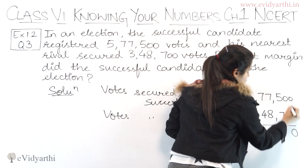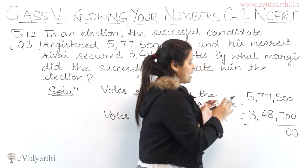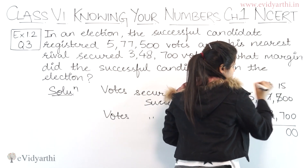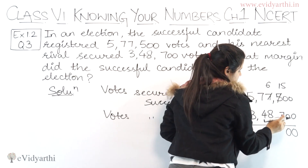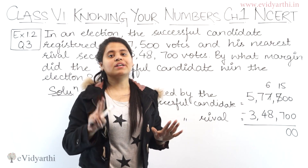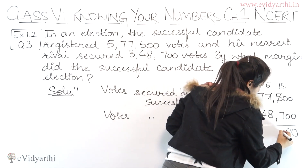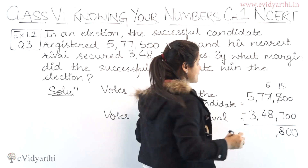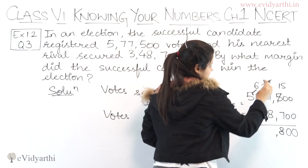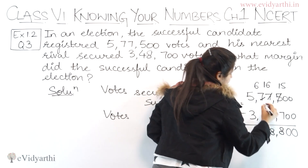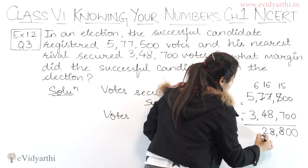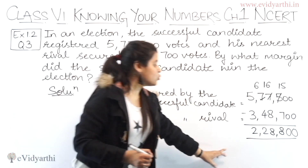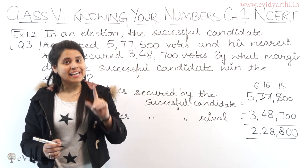0 minus 0 is 0. 0 minus 0 is 0 again. Then 5 minus 7 — we borrow, so it becomes 15 minus 7 which is 8. Then 6 becomes 16 minus 8 which is 8. Then 6 minus 4 is 2. And 5 minus 3 is 2. So the winning candidate won by 2,28,800 votes.